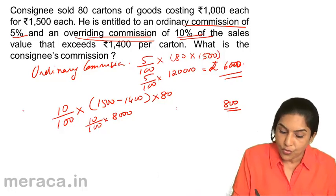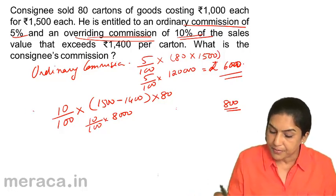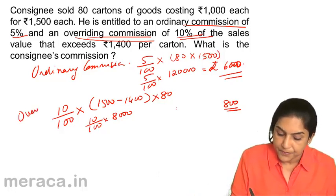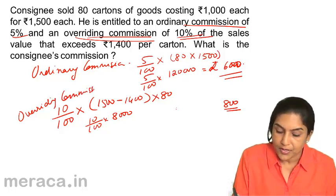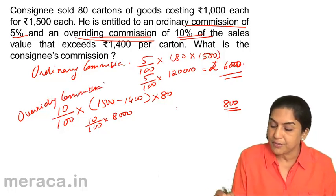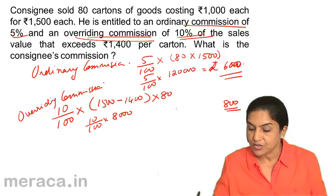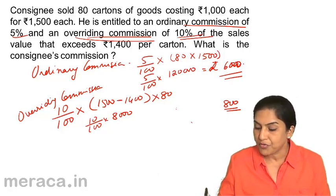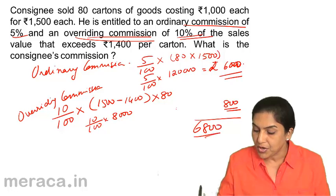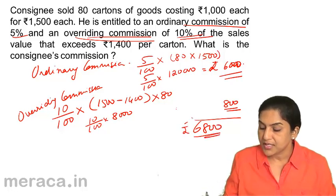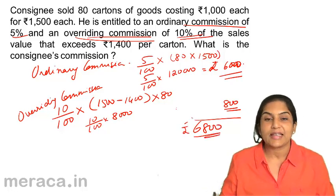This is the overriding commission. So total commission: ordinary commission of 6,000, overriding commission of 800, total commission of 6,800.